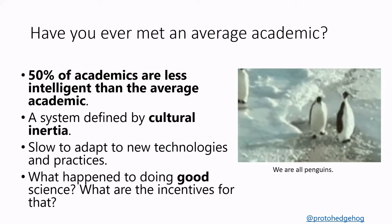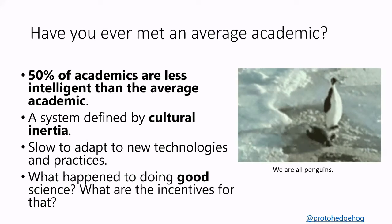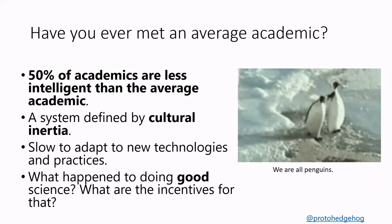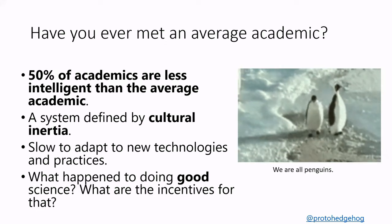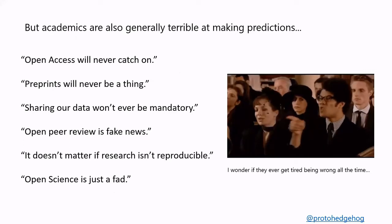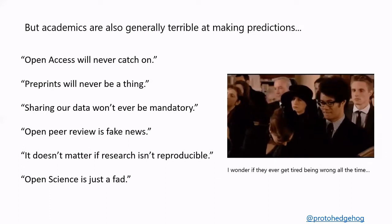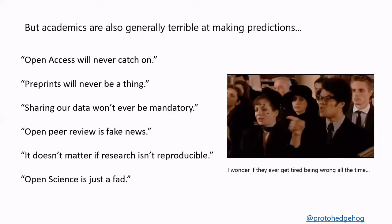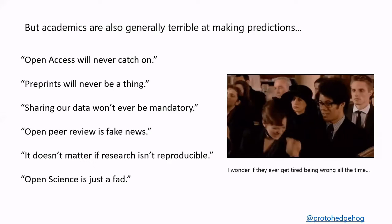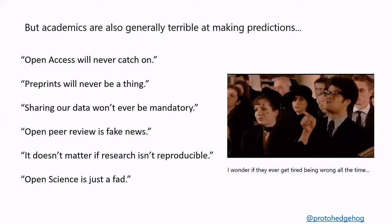This penguin effect is a beautiful analogy to describe how research communities function — we are generally slow to adapt to new technologies and practices. In my time in this space, I've heard so many bad predictions, mostly from UK academics: things like 'open access will never catch on,' 'preprints will never be a thing,' 'sharing our data' — all of these things we might consider open scientific practices. Every single time the old guard have said these things, they've been wrong. I wonder if they ever get tired of being on the wrong side of history.